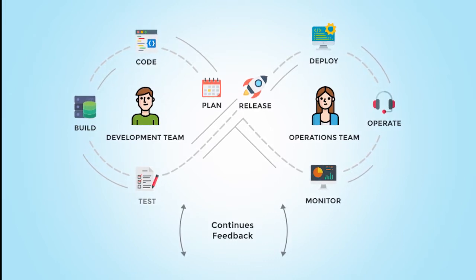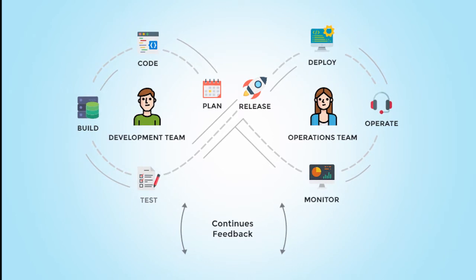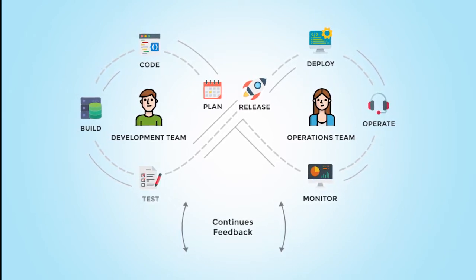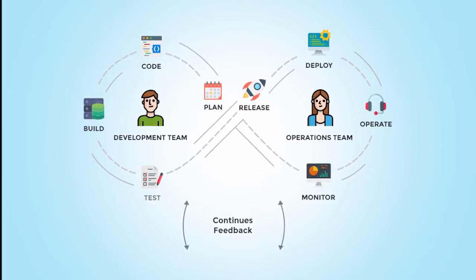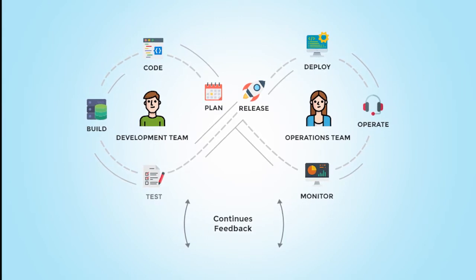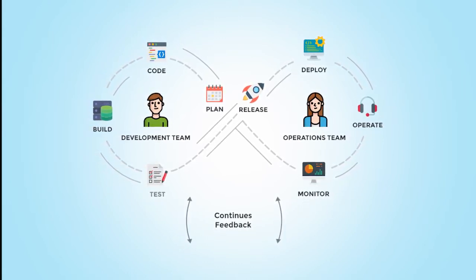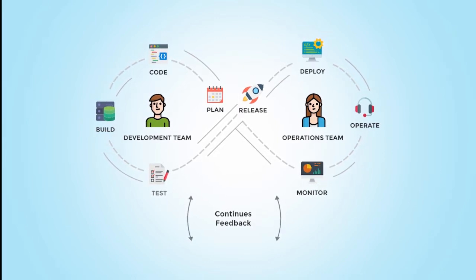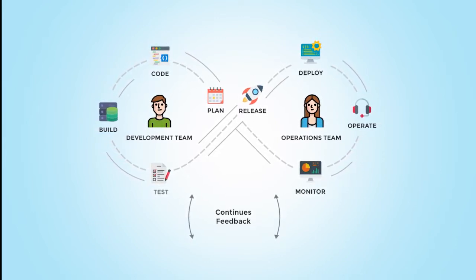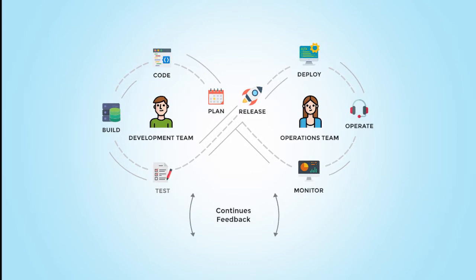If everything goes well, the operations team uploads the code to build servers. Sometimes developers run the code on their own system and forward it to the operations team — sometimes the code runs, sometimes it doesn't. So what do we do at that point? This is where we need to understand the need for DevOps, and there are two models: the waterfall model and the agile model.